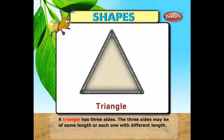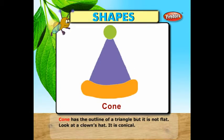A triangle has three sides. The three sides may be of the same length or each one with a different length. A cone has the outline of a triangle but it is not flat. Look at a clown's hat. It is conical.